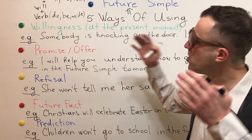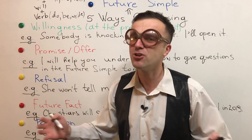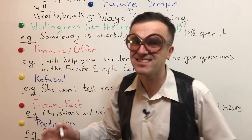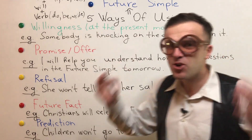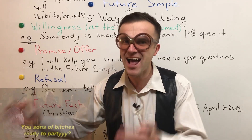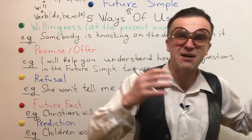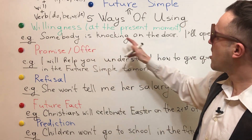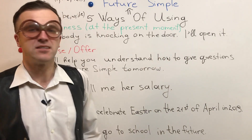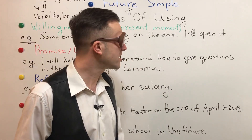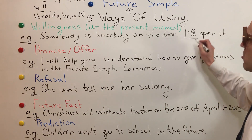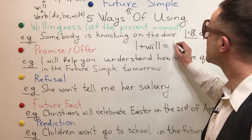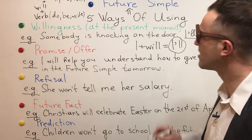So let's move on to the first way of using the Future Simple. The first way is willingness — when you are ready to do something. For example, somebody is knocking on the door: 'I'll open it.' So I'm ready to open it. Here we have the contraction form of 'I will': I plus will gives I'll.